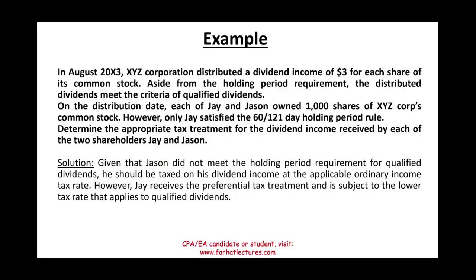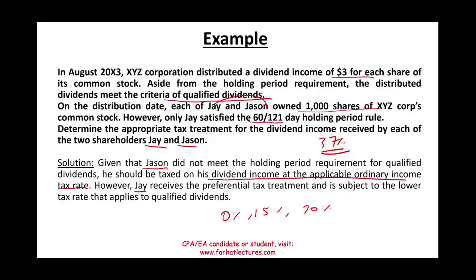Example: In August, XYZ Corporation distributed a dividend of $3 per share. Each of Jay and Jason owned 1,000 shares. The dividend meets all criteria for a qualified dividend aside from the holding period. Jay satisfied the 60-day holding period and therefore qualifies for the preferential tax rate of 0%, 15%, or 20%. Jason did not meet the holding period, so his dividend income is taxed at the ordinary income tax rate — potentially up to 37%.